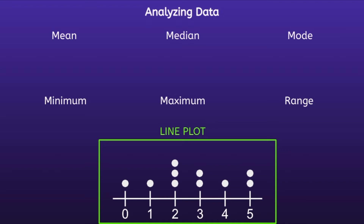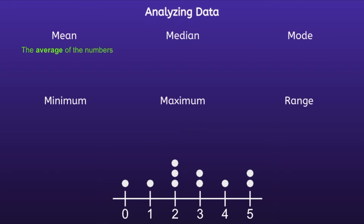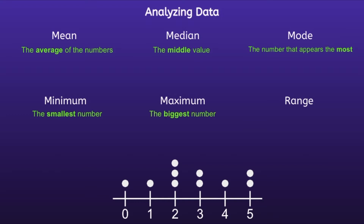We can better analyze this data by finding the mean, median, mode, minimum, maximum, and range. The mean is the average of the numbers. The median is the middle value. The mode is the number that appears the most. The minimum is the smallest number. The maximum is the biggest number. And the range is how much the data is spread out.